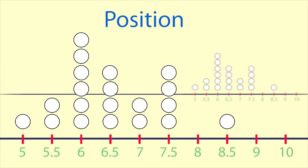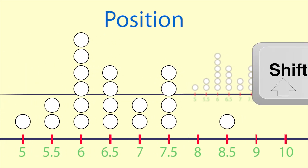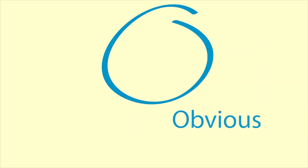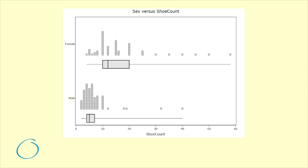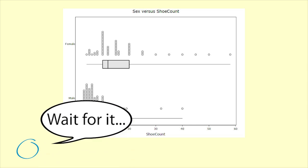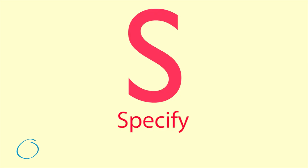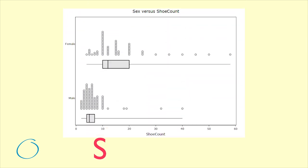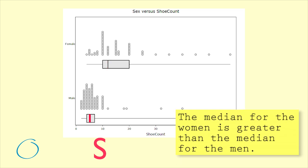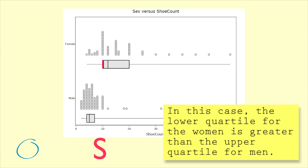First we will look at position. As we are comparing two graphs we need to comment on their relative positions, sometimes called shift. Obvious — we state what we can see; it does not need to be tricky and can be quite obvious. We can see that the graph for the women is clearly to the right of the one for the men. Specify — we say more carefully what we have observed, so someone else would understand what we mean. We could say the median for the women is greater than the median for the men. In this case, the lower quartile for the women is greater than the upper quartile for the men.